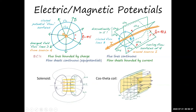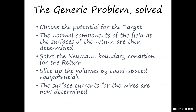The general procedure: choose the potential you know in the target region. The flux going out of the target forms the Neumann conditions for a boundary value problem with Laplace's equation in the return, where the outer surface of the return has zero flux boundary conditions. Once you've solved for the equal potential outside, slice up both target and return volumes with equally spaced potentials, then wind wires around each equal potential both inside and outside.